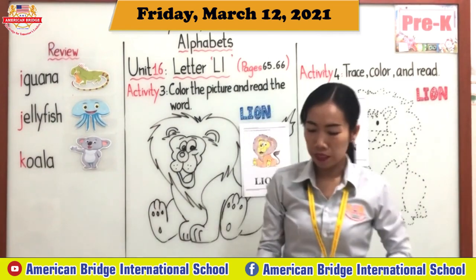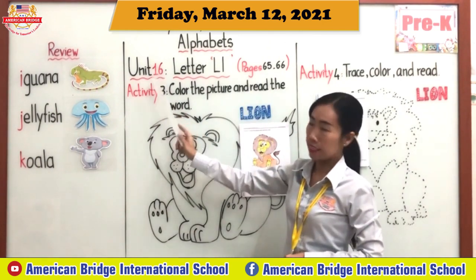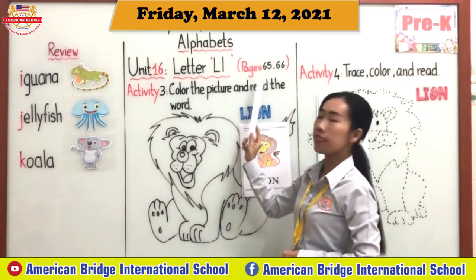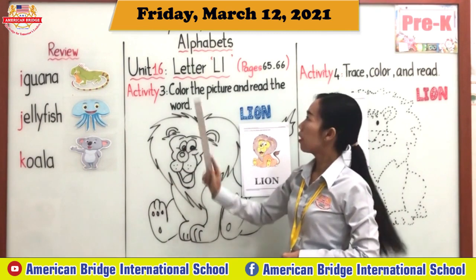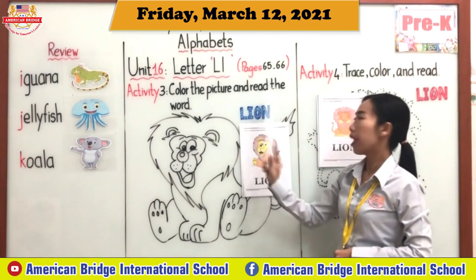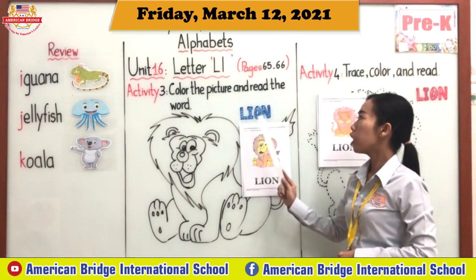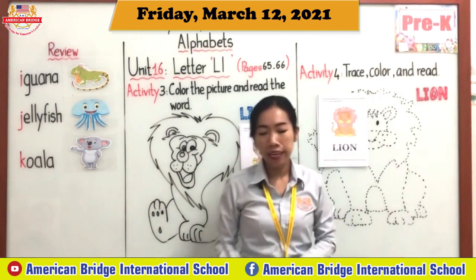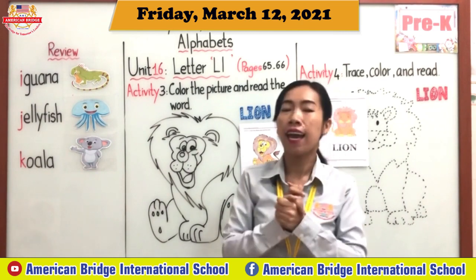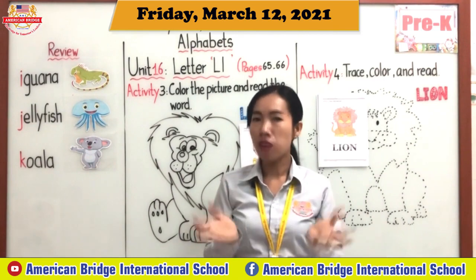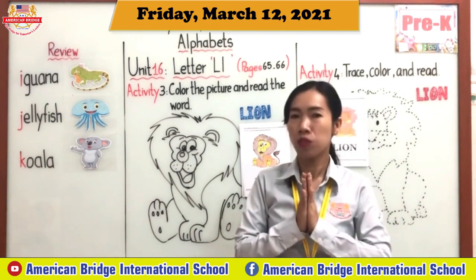Now please look at the whiteboard. Read the alphabet with teacher. You need the letter L — pages 65 and 66, Activity 3: color the picture and read the word — lion, L-I-O-N, lion. Okay everyone, don't forget to tell your mommy and daddy what you learned today. Today we studied about capital L, small l, and the word lion. You know how to color. Okay, goodbye everyone, see you tomorrow, bye bye.